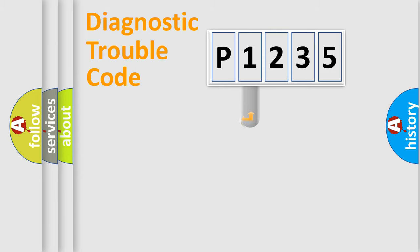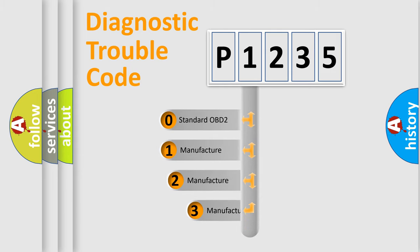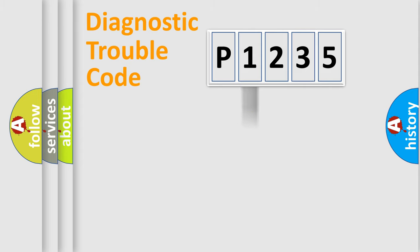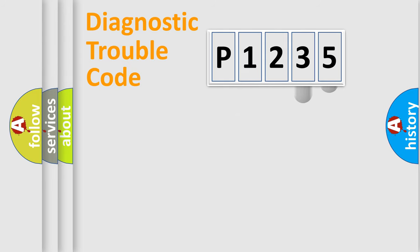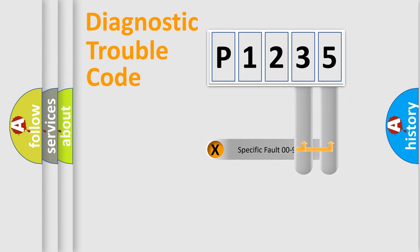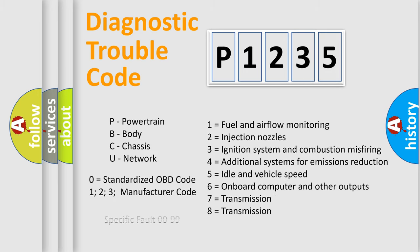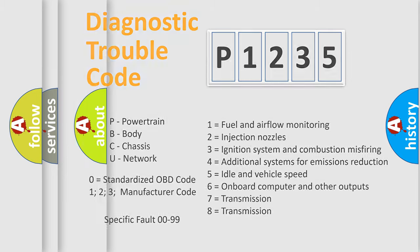This distribution is defined in the first character of the code. If the second character is expressed as zero, it is a standardized error. In the case of numbers 1, 2, or 3, it is a more specific expression of a car-specific error. The third character specifies a subset of errors. The distribution shown is valid only for the standardized DTC code. Only the last two characters define the specific fault of the group. This division is valid only if the second character code is expressed by the number zero.